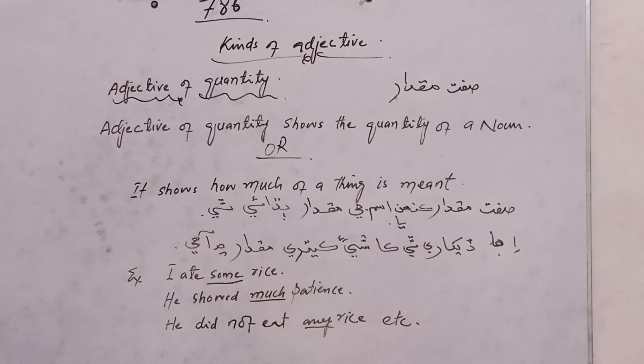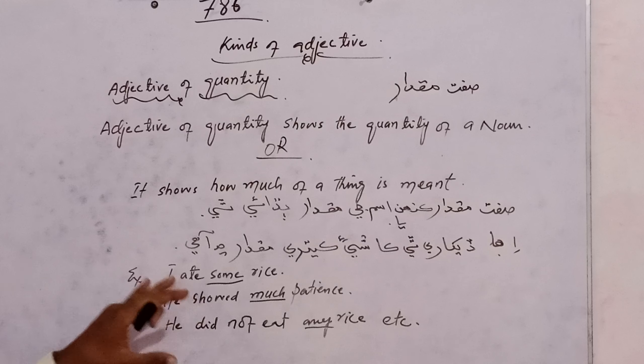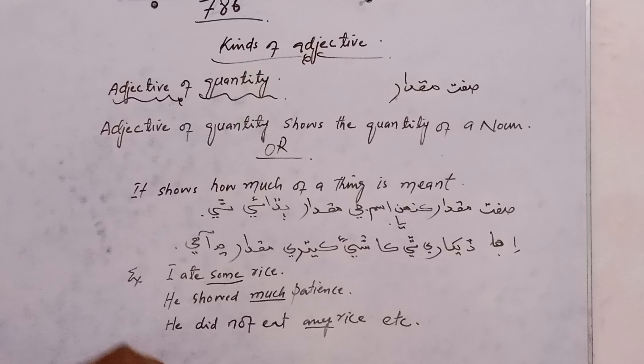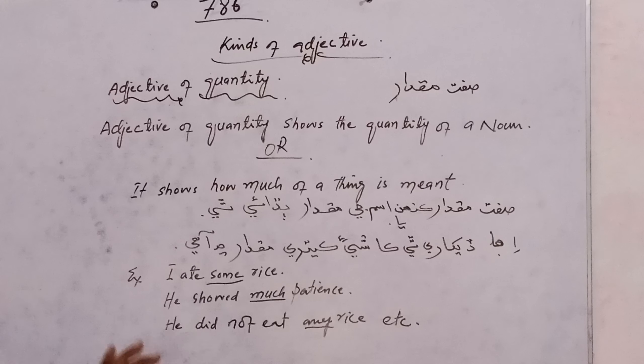For example, the sentence: 'I ate some rice.' The underlined word 'some' is related to the adjective of quantity — 'some' is used to show its quantity.